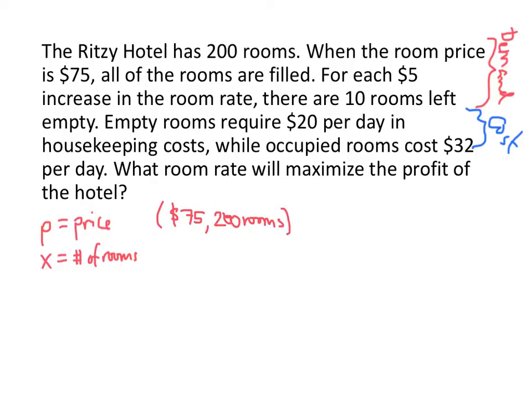And then they tell us that if we increase the price by $5, the number of rooms that we fill will go down by 10. So we can think of that as another point, 80, 190. And we can keep going like this, $85, 180, and so on. But what we're seeing here is that this is a linear relationship. If we were to plot all of these points, they would all lie on a single line. And if we can find a formula for that line, then that will give us the formula that we're looking for to find our demand equation.